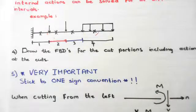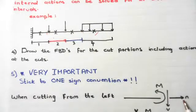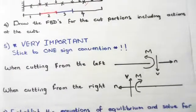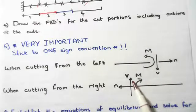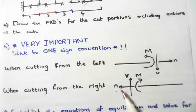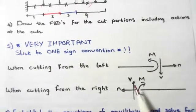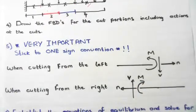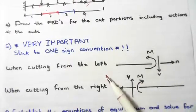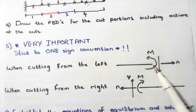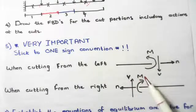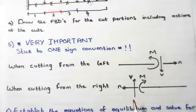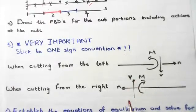When cutting from the left: shear force V points down, axial force N points out to the right. When cutting from the right: the moment is clockwise, shear is vertically upwards, and axial force points to the left. They have opposite directions because if you cut from the left and then from the right, these forces balance each other out. It's extremely important to stick to one sign convention.